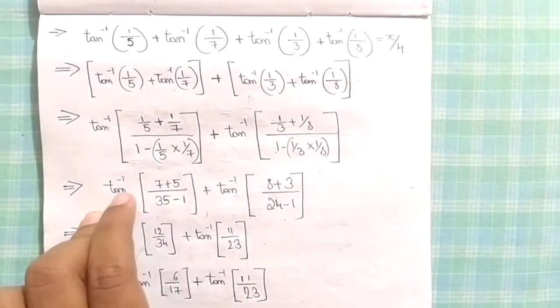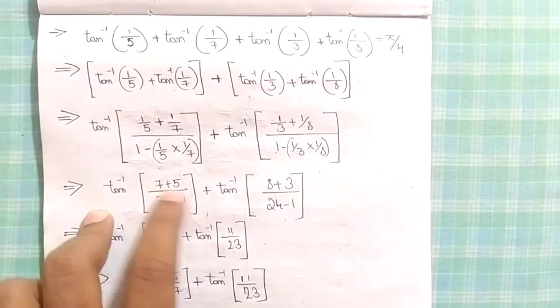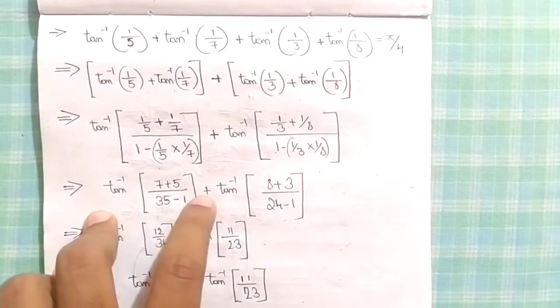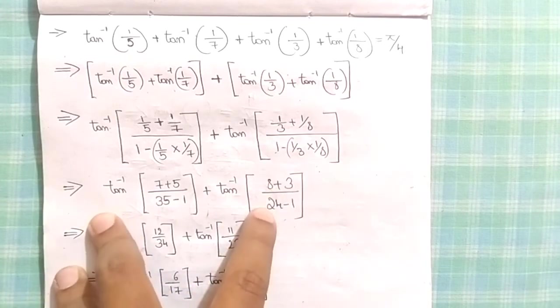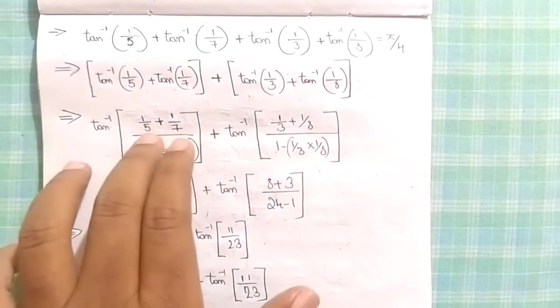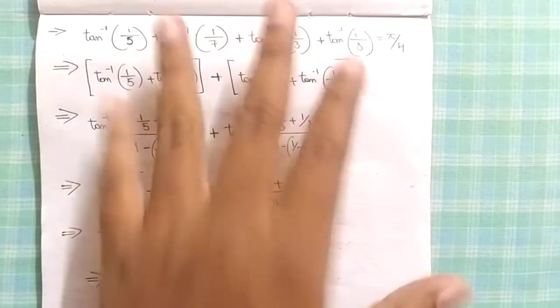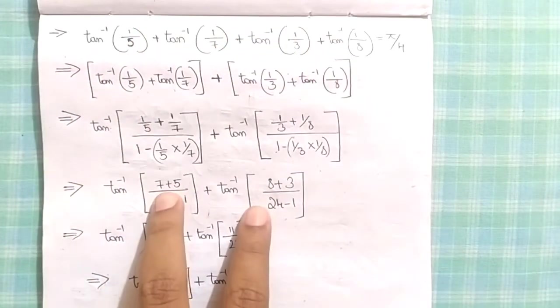This group can be simplified into tan inverse of (7 + 5)/(35 - 1) plus tan inverse of (8 + 3)/(24 - 1). You can see that four terms are reduced to two terms, and we still have two terms.